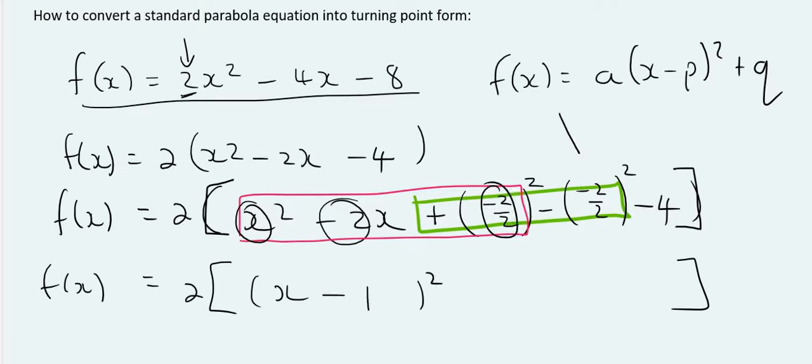Then, what we do is we put this part over here on the calculator, this part over there, and if you put that on the calculator, that will give you minus 5.